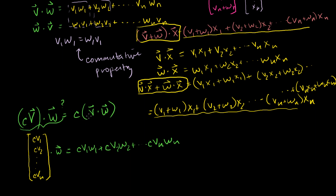Now let's do this side. What is v dot w? I'll write it here. v dot w, we've done this multiple times. This is just v1 w1 plus v2 w2, all the way to vn wn.